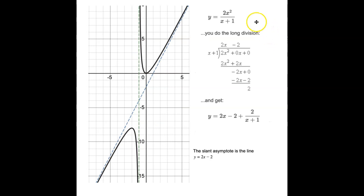Here's a second example. I'm interested in the function y = 2x² over x + 1. And if I do this long division, I'm going to have 2x² + 0x + 0 divided by x + 1. Again, when I do this math, I'm going to get 2x - 2 with the remainder of 2 over x + 1 as my result.